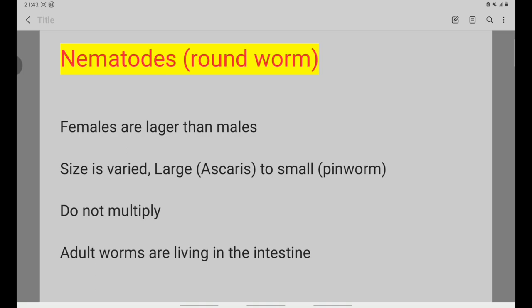These are female and male. These are large and small. These are examples of Ascaris lumbricoides. These are the adult worms in the intestines.